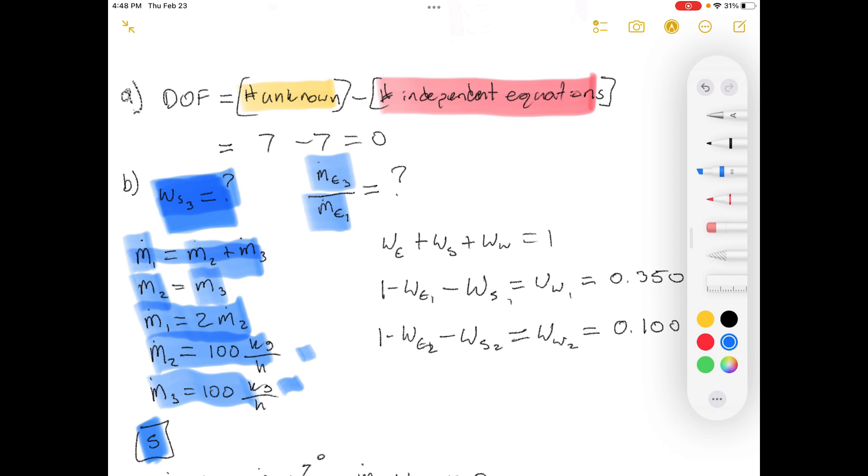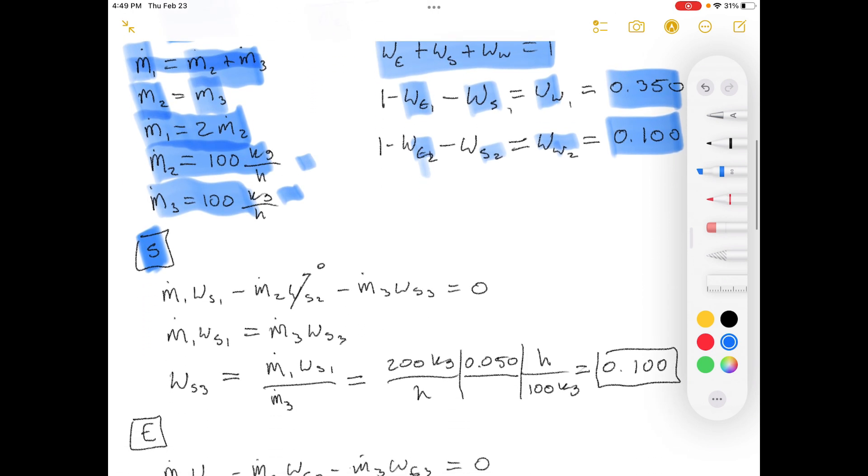Okay. The other thing that we know for stream one and stream two, they gave us enough information to say what the mass fractions are in those instances, because we know that this is our other independent equation, which applies to both, all three streams. Okay, so we have one minus mass fraction ethanol one, mass fraction solute one equals mass fraction of water one. So we know the mass fraction of water there. Mass fraction of ethanol two, solute two equals mass fraction of water in stream two. So now we have mass fraction one or stream two.